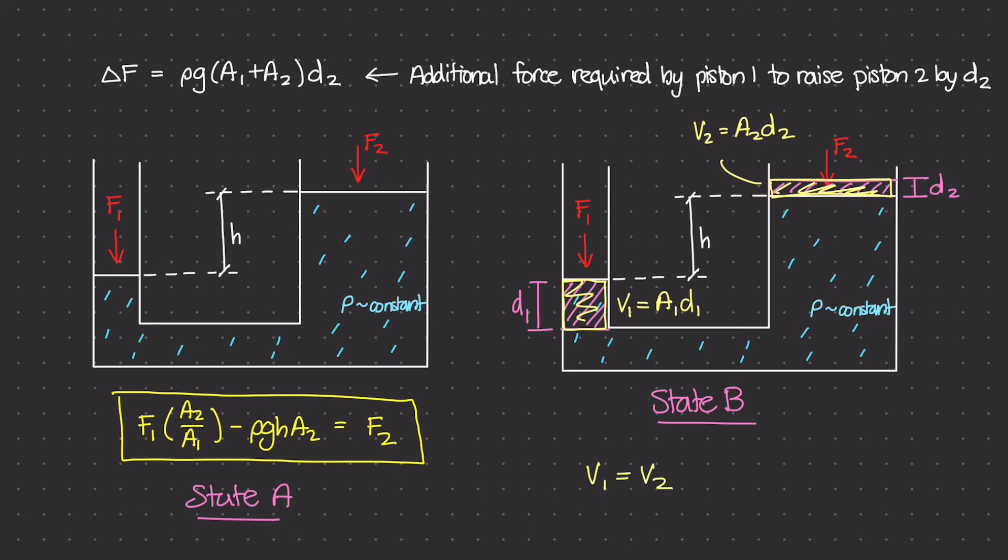And that makes sense, right? Whatever you push down on piston 1, that liquid is going to get displaced somewhere else. And in this case, it's going to be over here by piston 2. We actually have this equation A1 D1 becomes, or is equal to A2 D2.